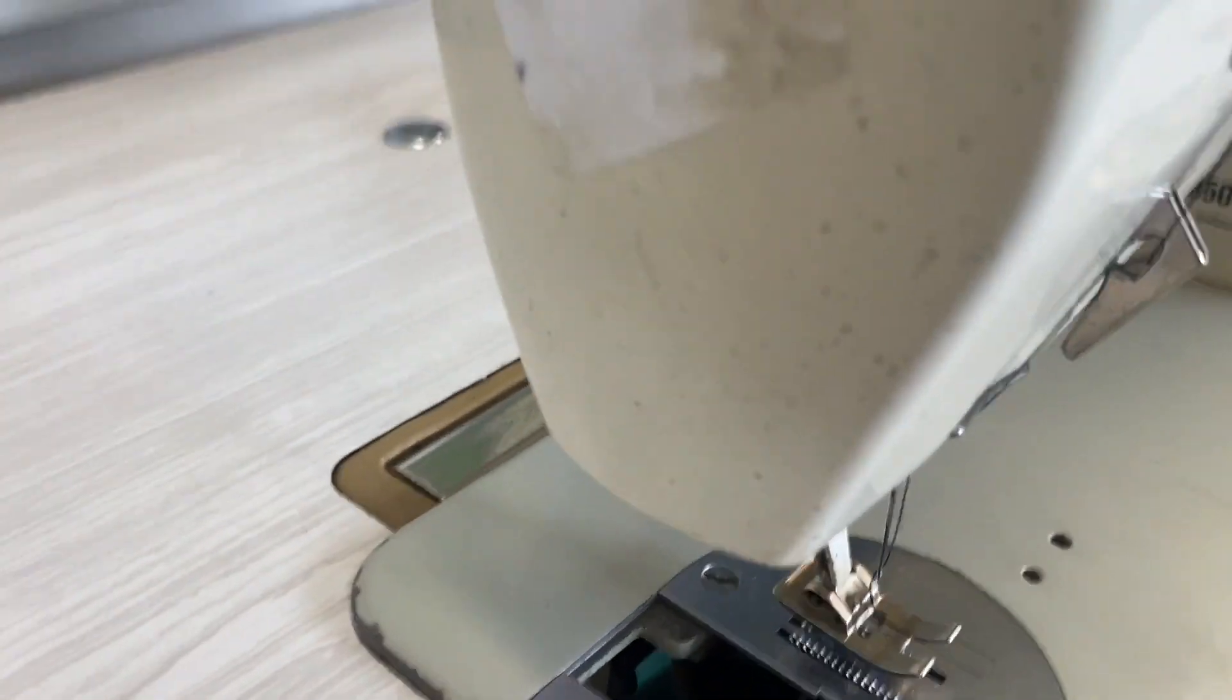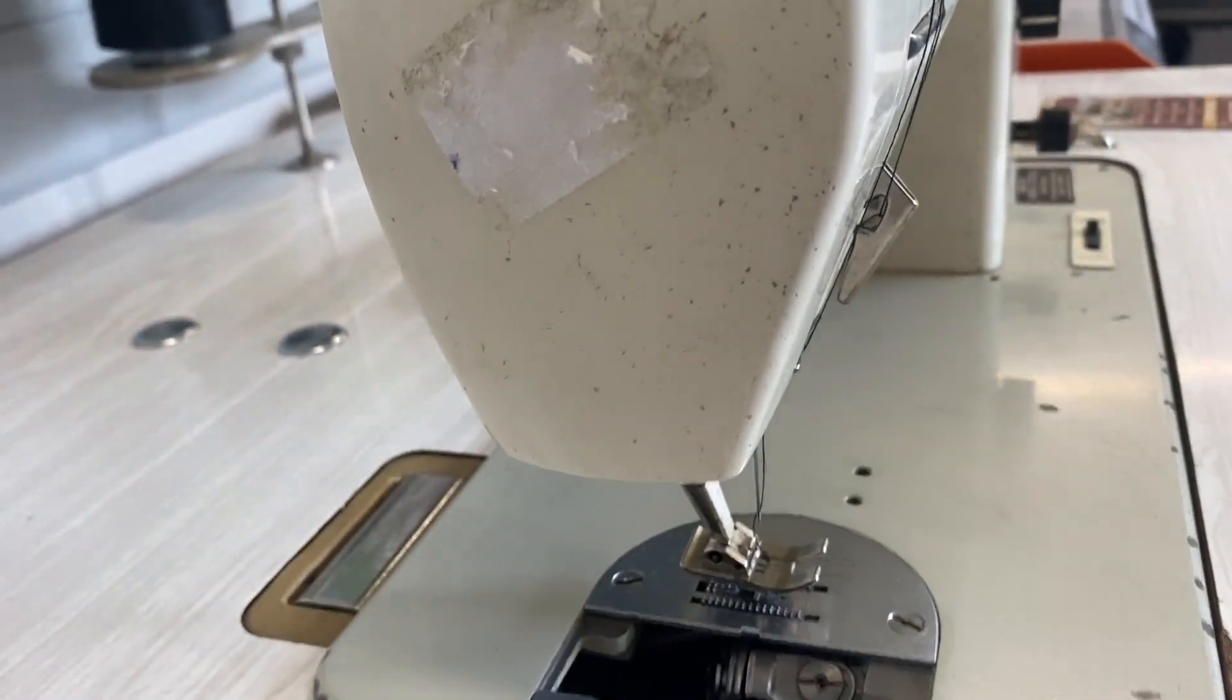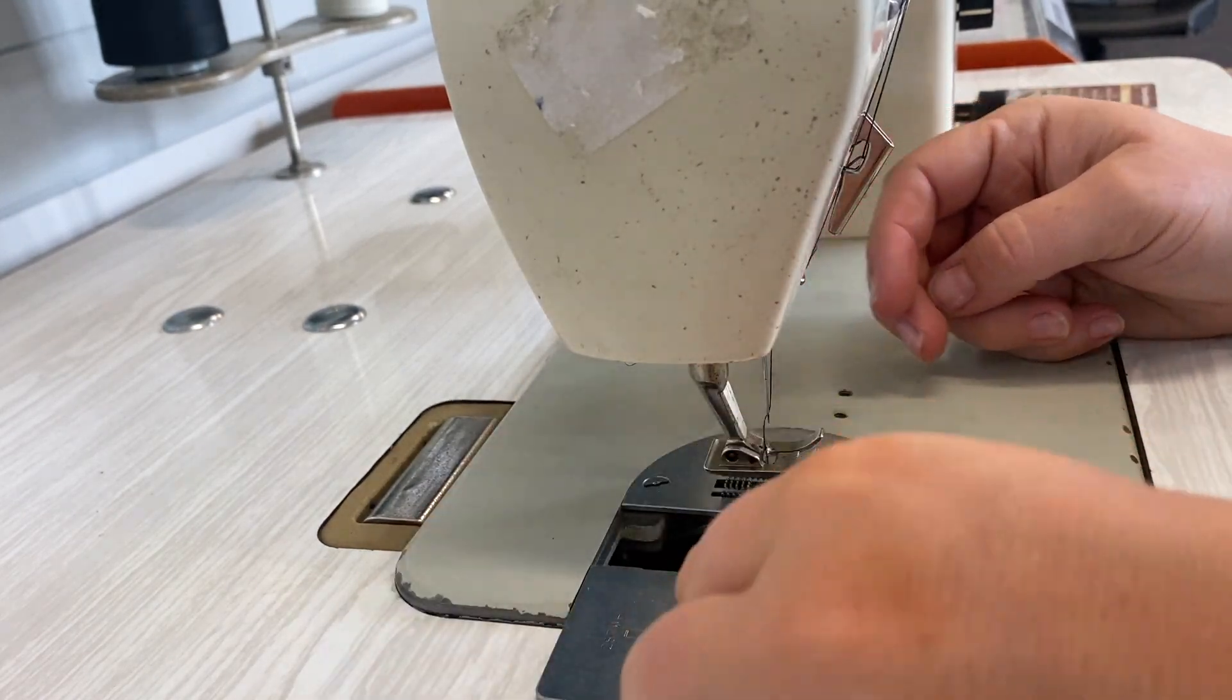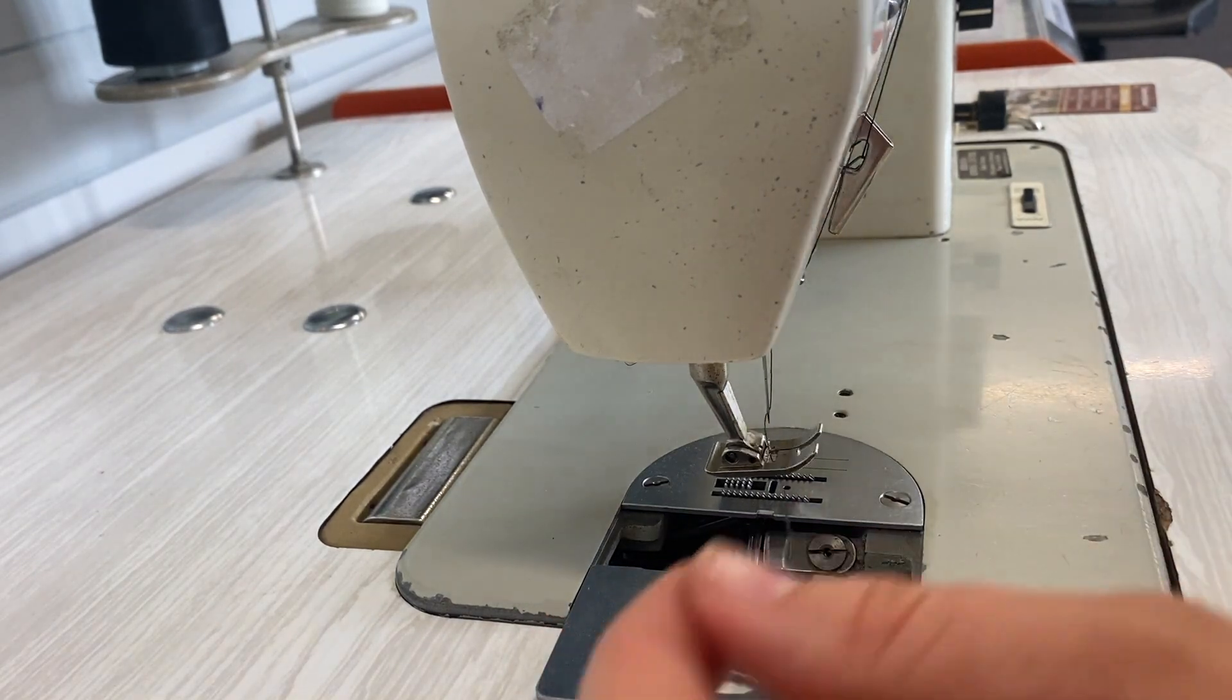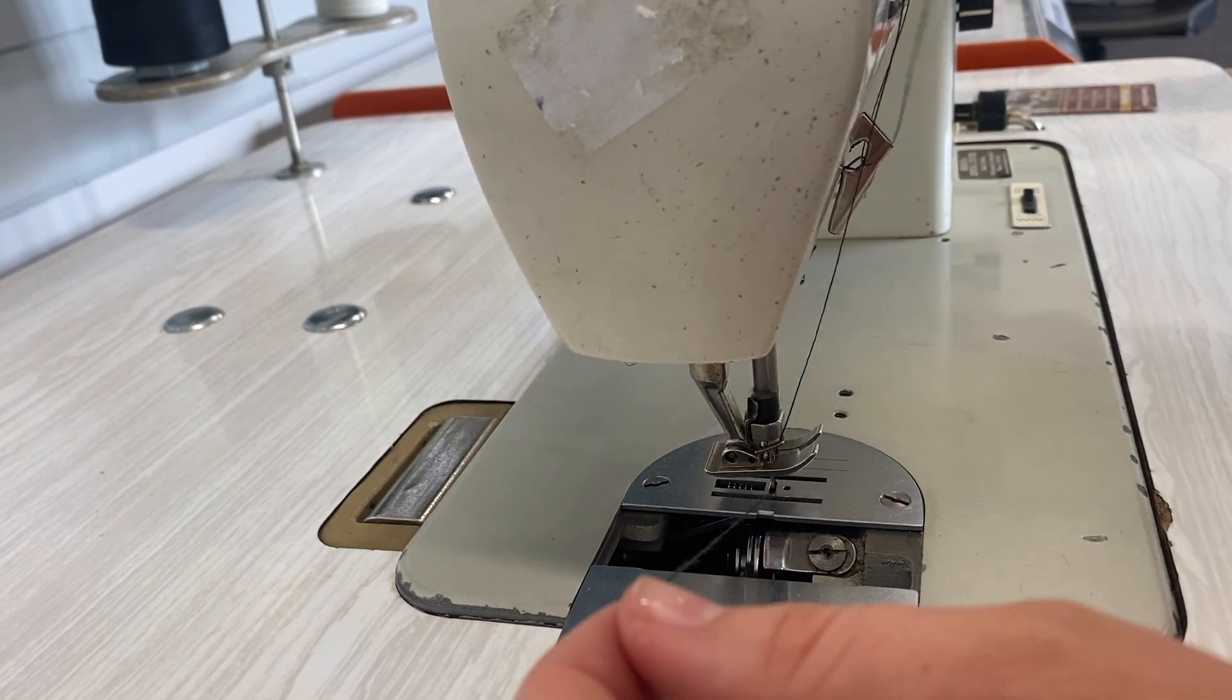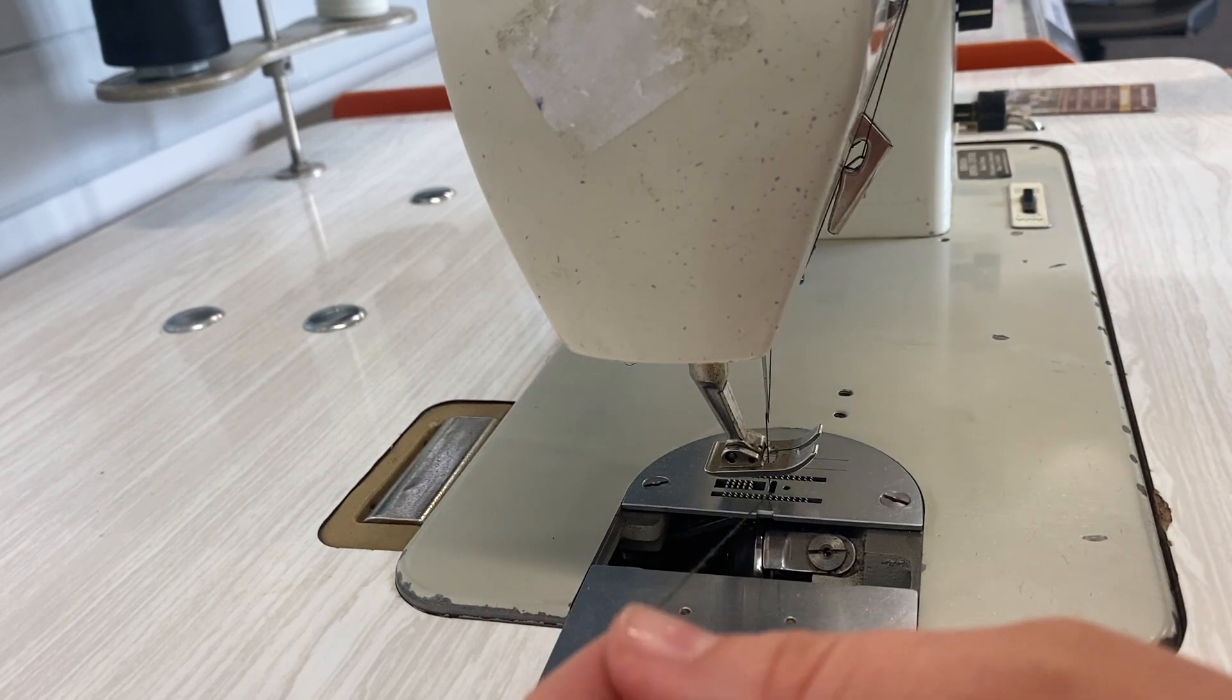That is all ready to go. Then you would do your thread take-up as you would a normal machine. You've got your top thread there, and I'm holding that loosely. I'm using my hand wheel and doing a full circle—all the way down, all the way up.